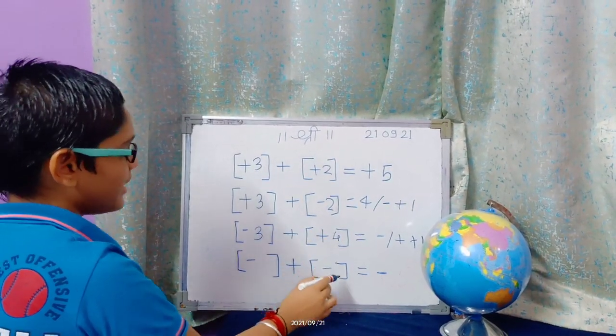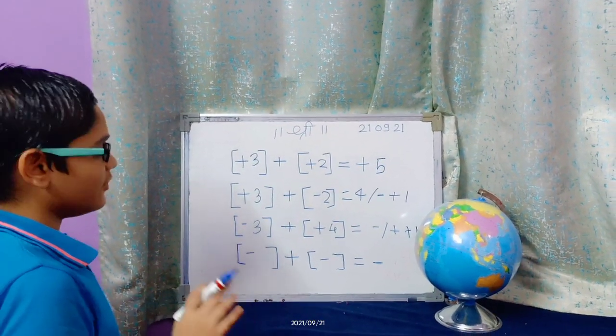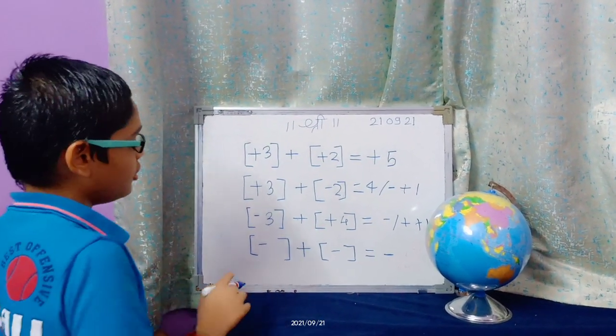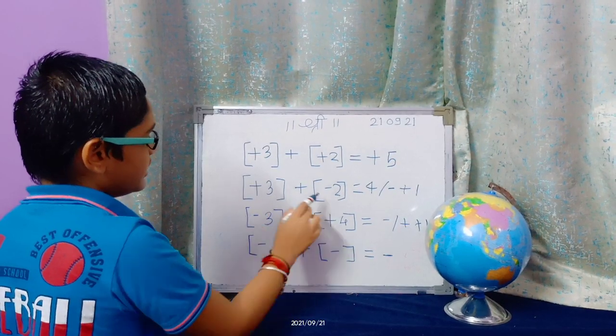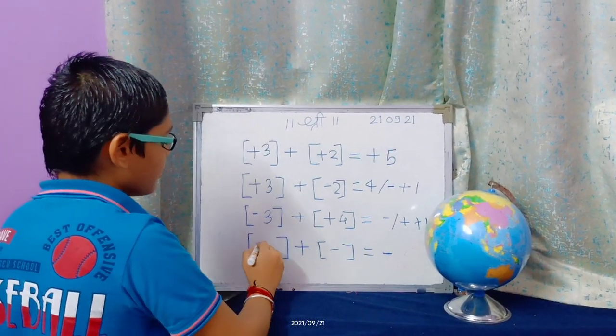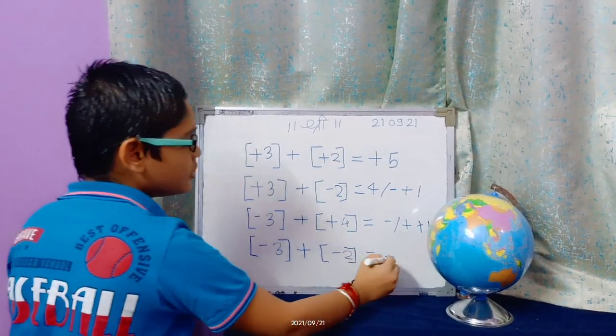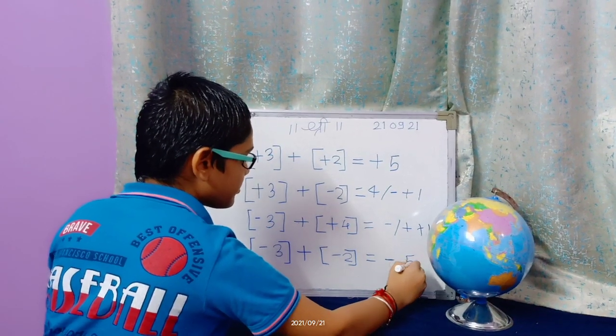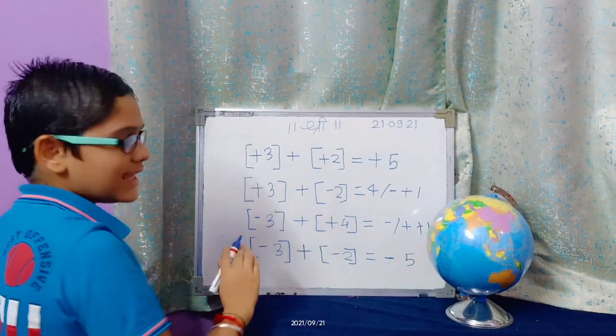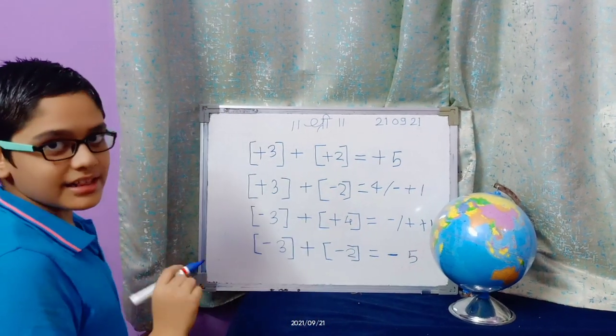Then minus plus minus. Now here is minus. So you would think that we would do subtraction. No. We would do minus 3 plus minus 2. It equals to 3 plus 2 is 5. And the common sign is minus, so minus 5. The answer is minus 5.